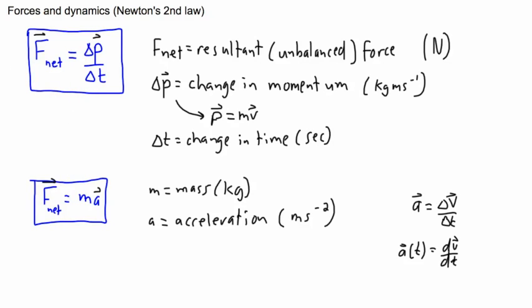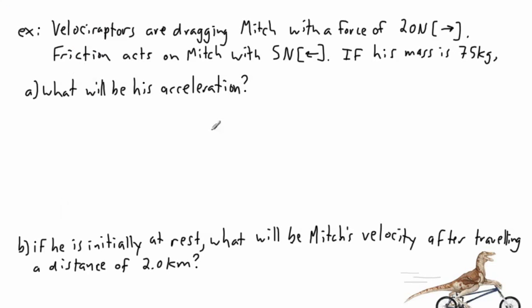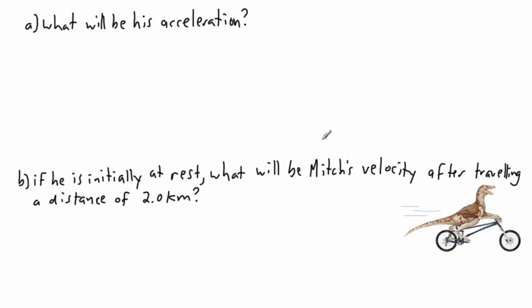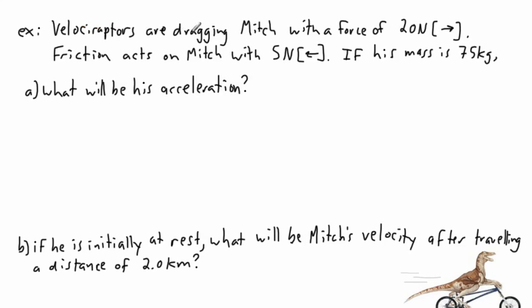So I thought maybe we could take a look at an example. So I've got an example here, it's a little bit silly but hey why not. I don't want to just have a regular box rolling down a hill or a box being moved. So we've got a velociraptor here. This is not at all realistic because of course velociraptors lived millions of years ago on Earth and this is now, so a velociraptor couldn't really be riding a bike. But we're going to assume that velociraptors are dragging Mitch with a force of 20 newtons to the right.